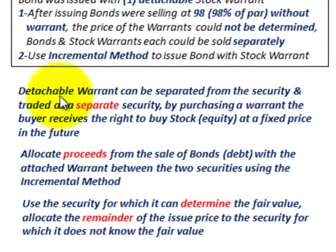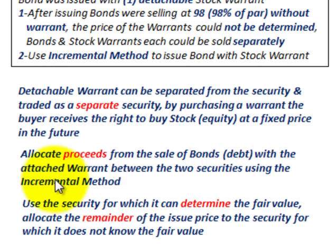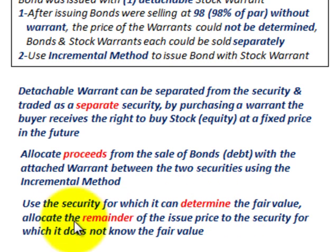A detachable warrant can be separated from the security and traded as a separate security. By purchasing a warrant, the buyer receives the right to buy stock equity in the company at a fixed price in the future. We have to allocate the proceeds from the sales of the bonds with the attached warrant between the two securities using the incremental method — using the security whose fair value can be determined, which is our bond, and allocating the remainder of the issue price to the security for which we do not know the fair value, which in this case is the warrant.